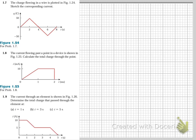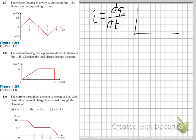Question 1.7: the charge flowing in a wire is plotted in figure 1.24 — sketch the corresponding current. We know that current I is equal to dQ over dT. Therefore, our corresponding current — the derivative of this — is 25, then minus 25, and then 25.